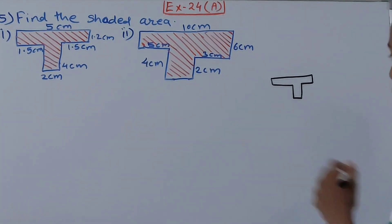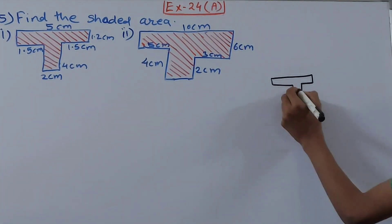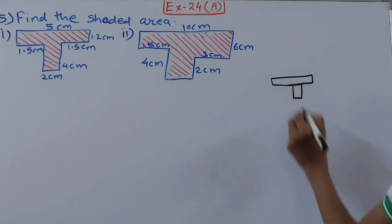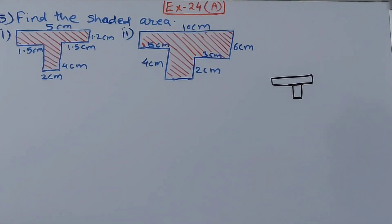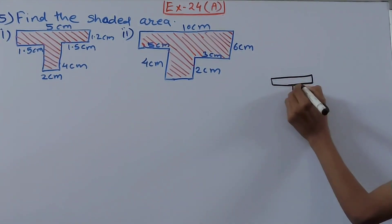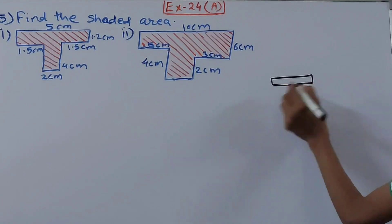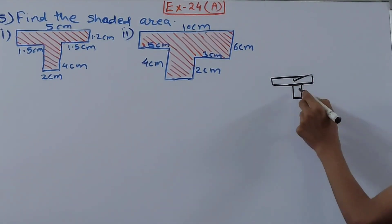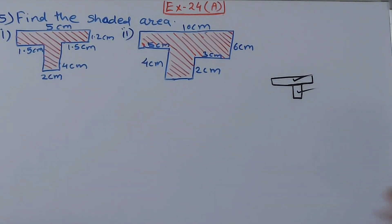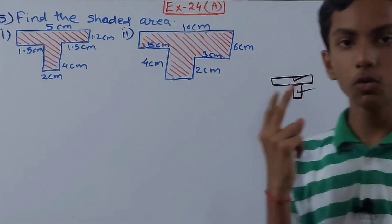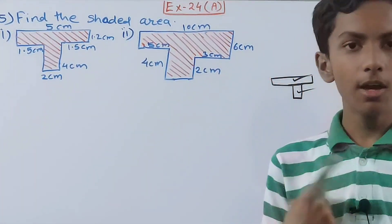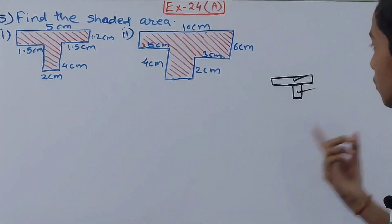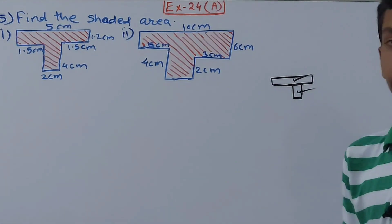What we will do is basically divide the figure into two parts. Once I draw this line between it, you can see we've got one rectangle here and one rectangle here — two rectangles. So we can use the formula for area of a rectangle.